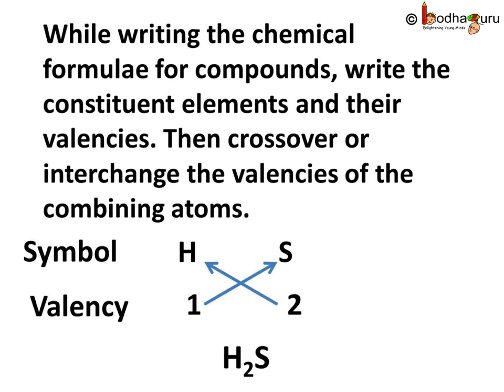While writing the chemical formula for compounds, write the constituent elements and their valencies and then cross over or interchange the valencies of the combining atoms. Here we have hydrogen and sulfur. Valency of hydrogen is 1, valency of sulfur is 2. Now we interchange the valencies and we get H2S. So, the chemical formula is H2S and the compound is hydrogen sulfide.